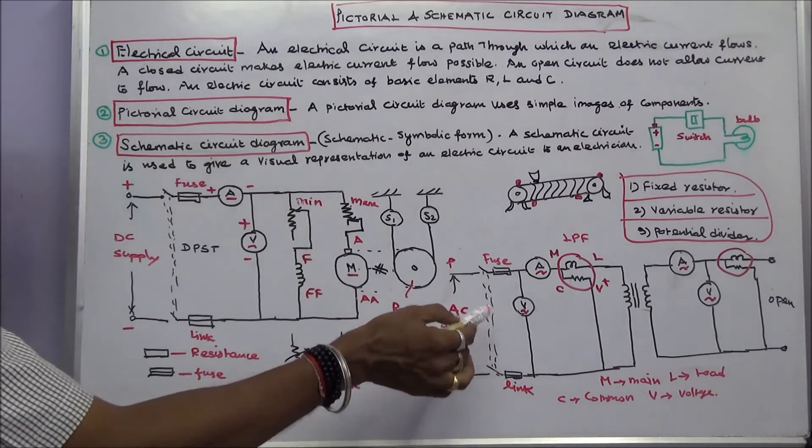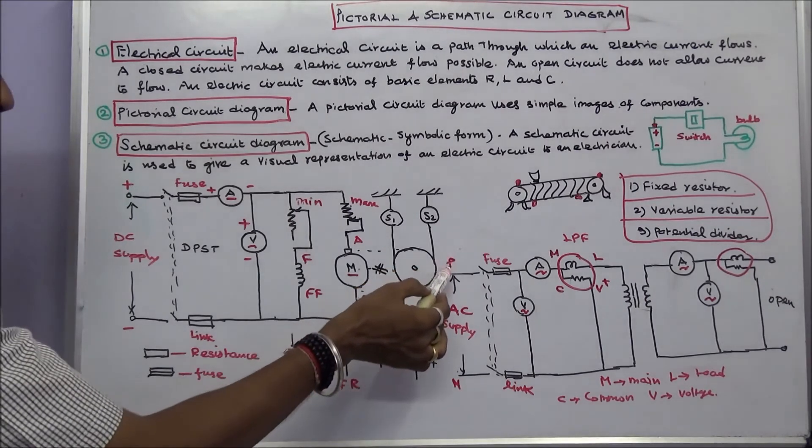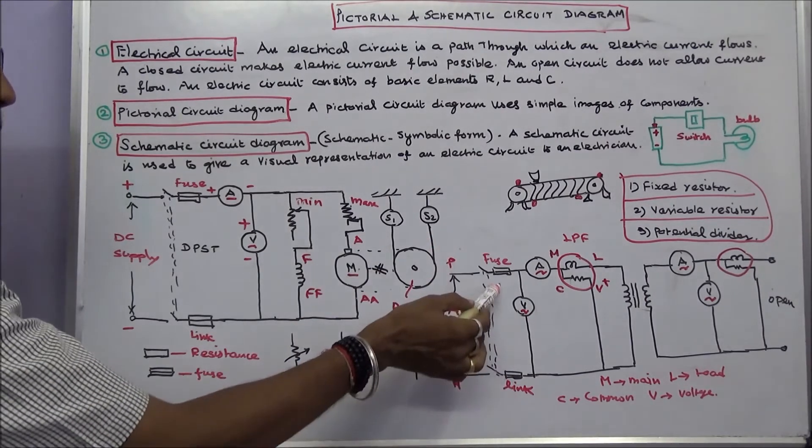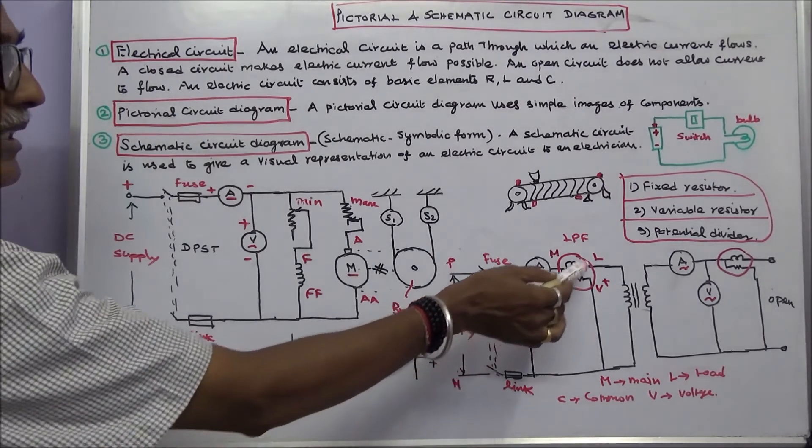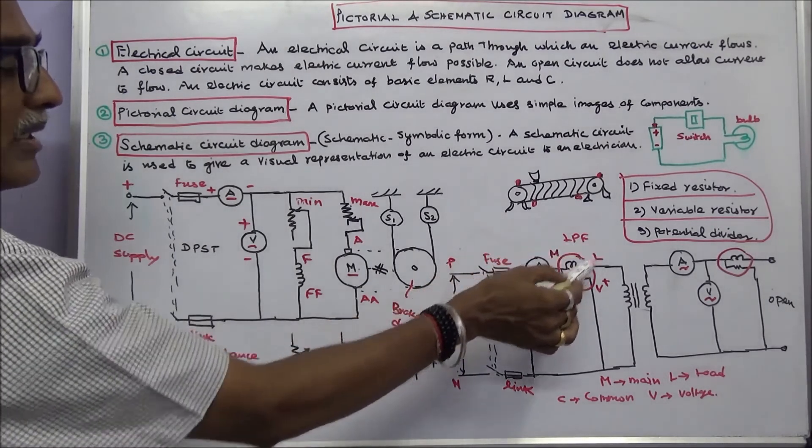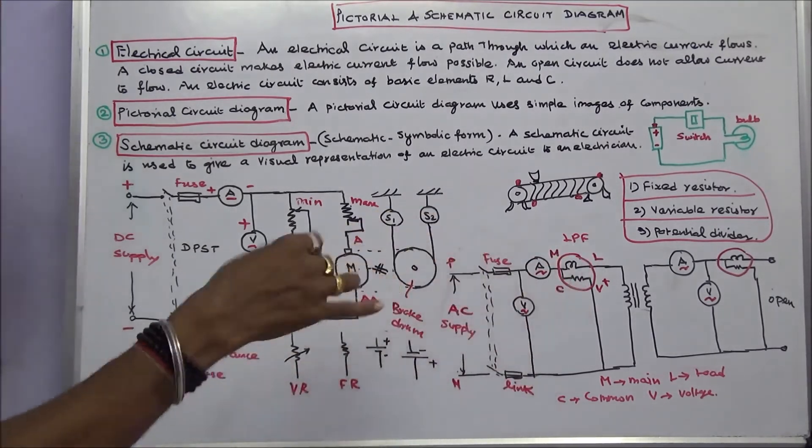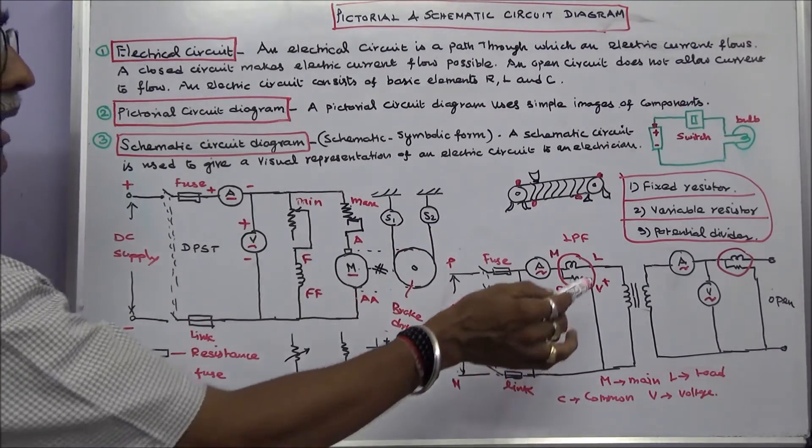This is an open circuit test of a single phase transformer. Phase P, neutral. This is link, this is fuse. Su voltmeter, SN meter. This is a symbol of wattmeter. M is main, L is load, C is common. If it is a dual range wattmeter, we have to choose a voltage 300 or 600. This is V.